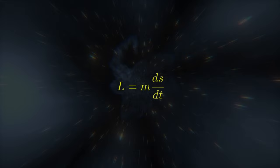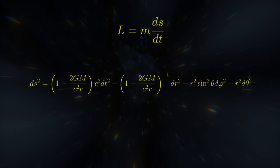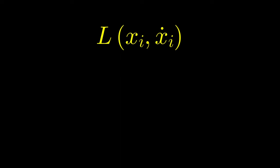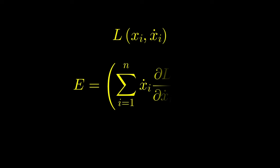All we need is the Lagrangian. The Lagrangian is the time derivative of the spacetime distance multiplied by mass — this is why metrics in general relativity are given in infinitesimal form. The Lagrangian is a scalar function dependent on the spacetime coordinates and their time derivatives. To obtain the energy of our particle, we multiply the time derivative of each coordinate by the derivative of the Lagrangian with respect to that time derivative, sum those products, and subtract the Lagrangian.